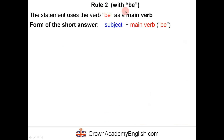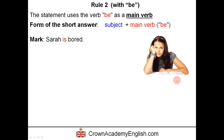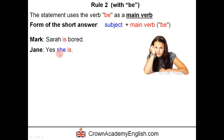Rule two with the verb be. If the statement uses the verb be as a main verb, the form of the short answer is subject followed by the main verb be. Example: Sarah is bored. Jane agrees: yes, she is. Notice we only use the full form in the affirmative — yes, she is. We never say yes, she's.